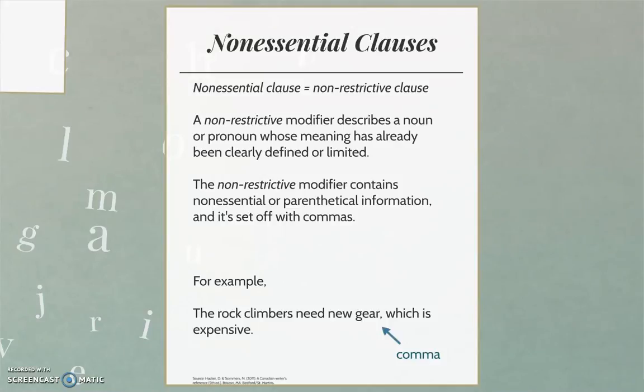For example: the rock climbers need new gear, which is expensive. In this sentence, the rock climbers need new gear, and the gear just happens to be expensive. This information about new gear is informative, but not crucial to the meaning of the sentence. You will notice that the non-essential information is set off with a comma.